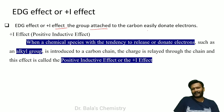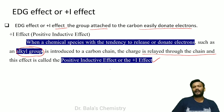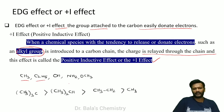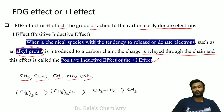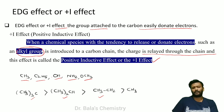The positive inductive (+I) effect: the group attached to the carbon easily donates electrons. Usually it is an alkyl group. Through the chain, it creates a positive inductive effect. For example, the methyl group, NH2 group, OCH3 group — all are +I effect groups. Some have more positive inductive effect, others have less.